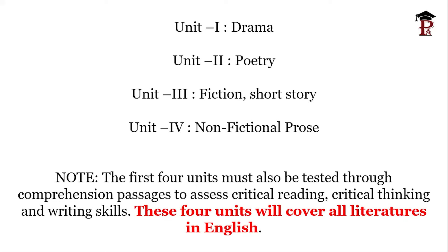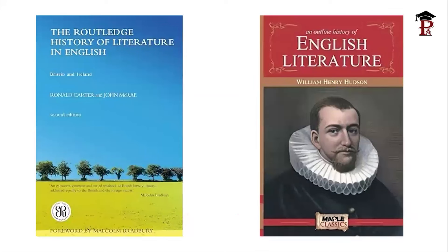This is the first part of your syllabus. For the first four units, you will use both Routledge and Hudson. If you are a beginner, we would always suggest you go for Hudson. If you want a more thorough reading, you should go for Routledge. Routledge is a comprehensive reference — from before Chaucer through postmodern writers, everyone is covered comprehensively in Routledge. Both Routledge and Hudson are very basic and important books for the first four units.